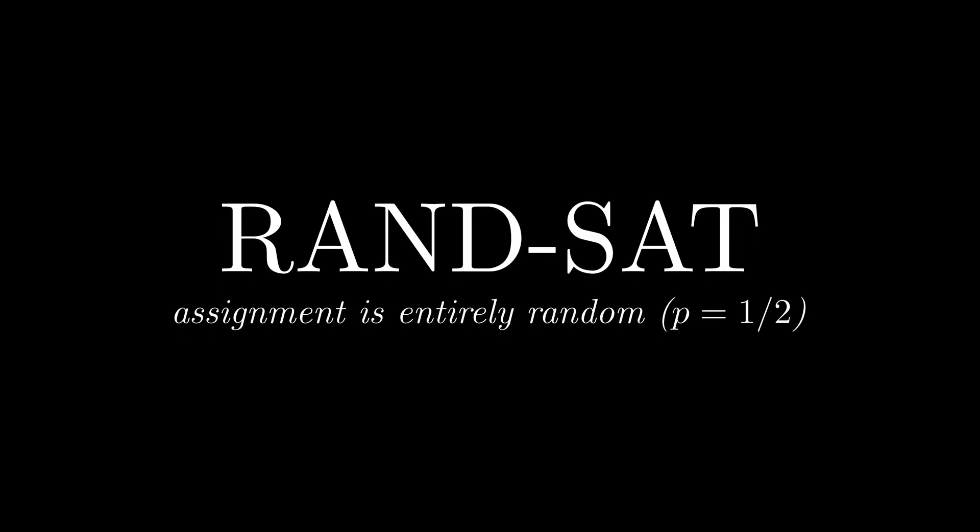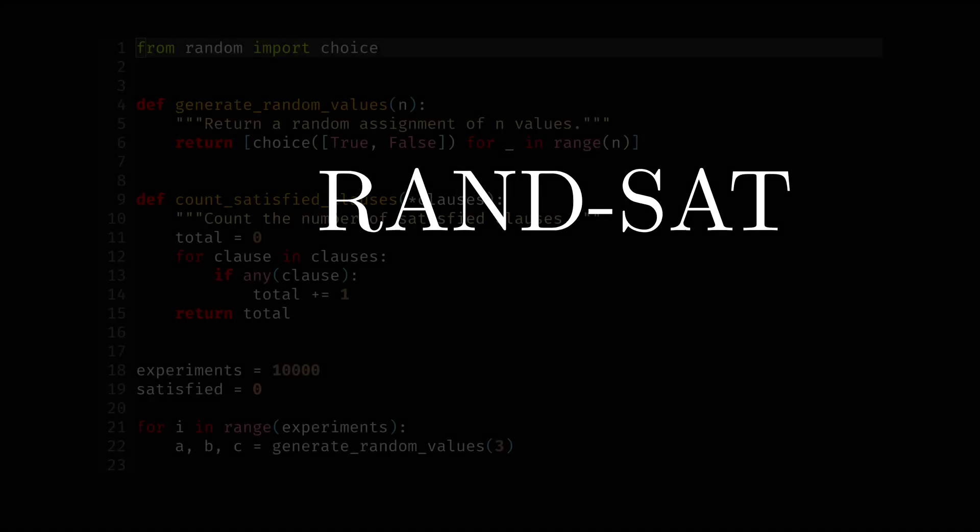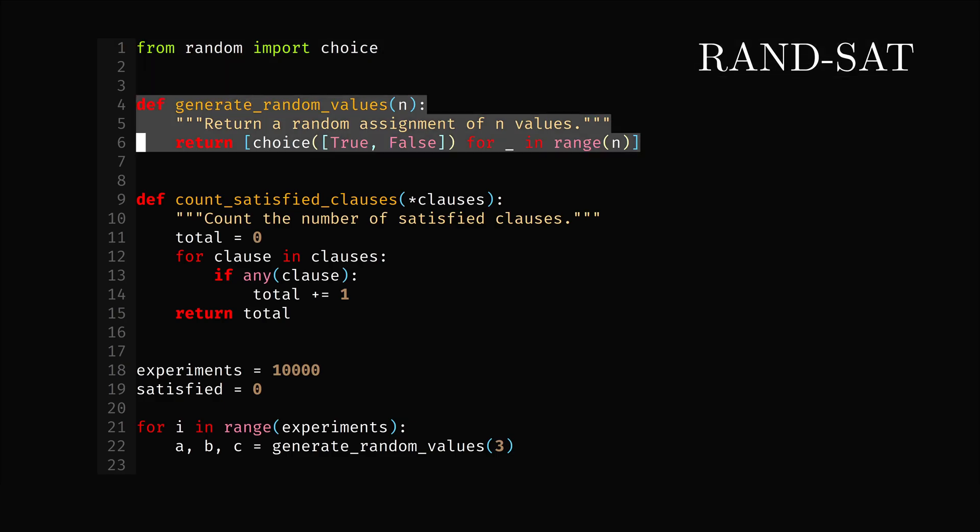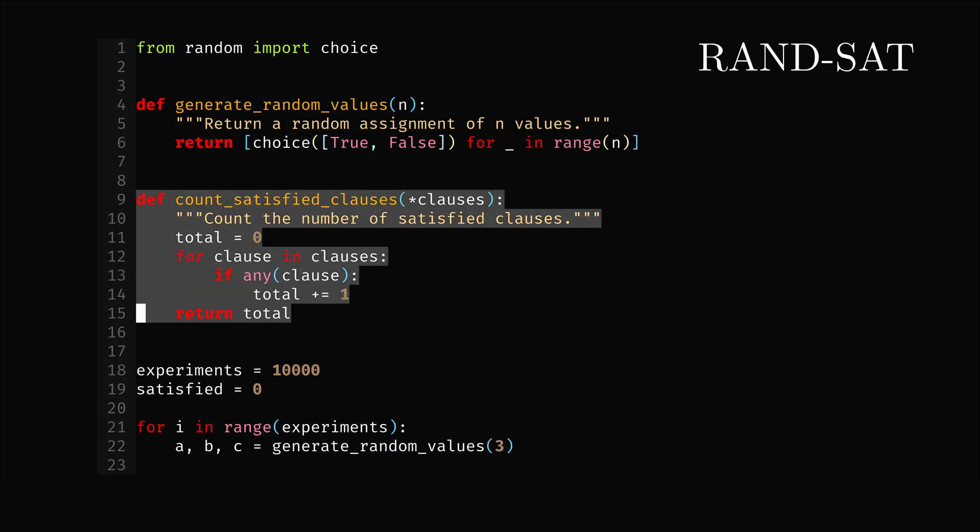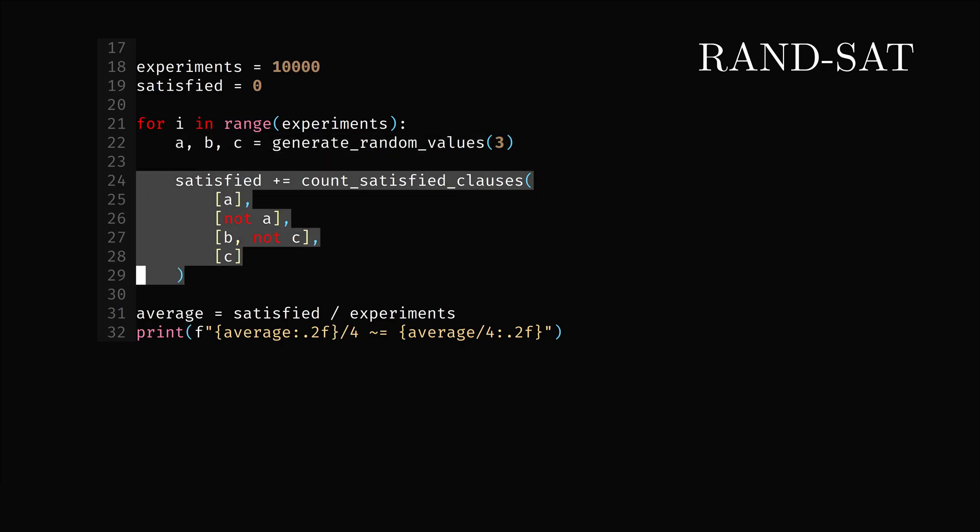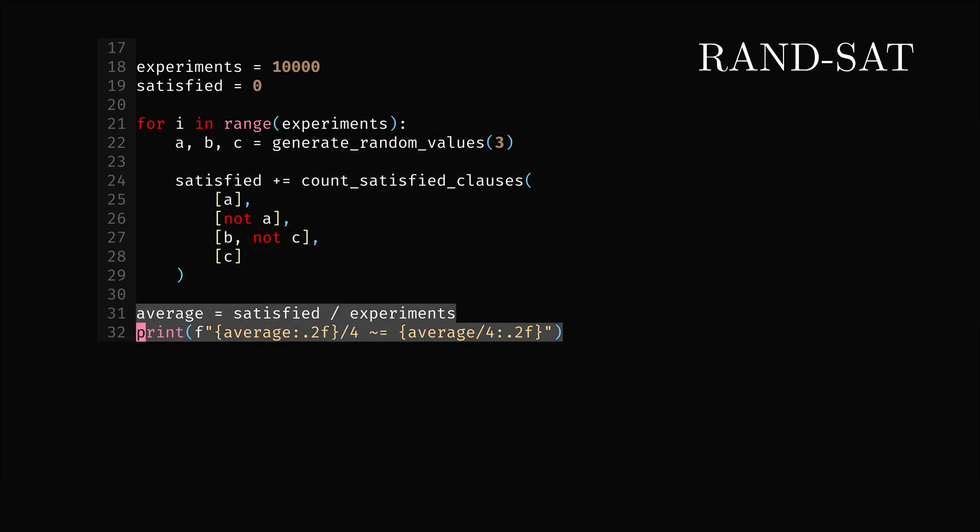Our first algorithm to solve MAX-SAT will be entirely random, assigning true and false values with the probability of one-half. I wrote a Python program to simulate it on the expression from before. We have a generateRandomValues function that randomly generates n Boolean values. We then have a countSatisfyClauses function that counts the number of satisfied clauses of the expression. Running 10,000 times in total, we randomly assign Boolean values to the literals and count the number of satisfied clauses, printing the satisfied percentage at the end.